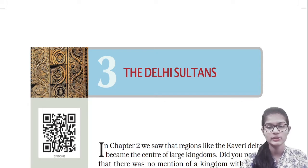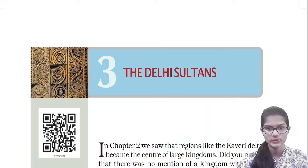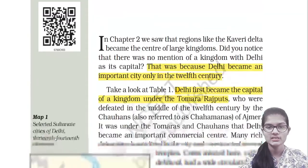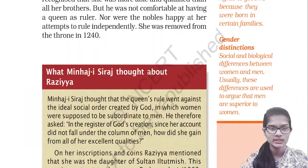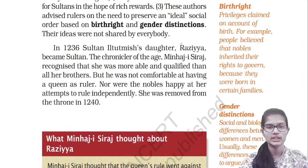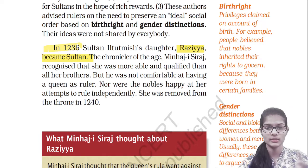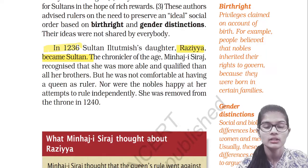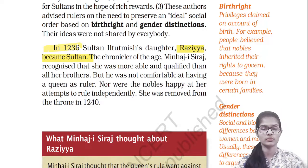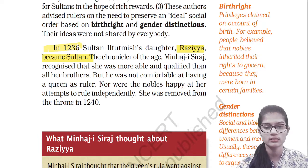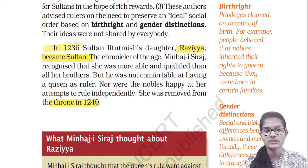Hello everyone, my name is Shambhavi. Hope you all are doing well. Today we are going to study Chapter 3 on the Delhi Sultanate from Class 7 History. Last time we studied that in 1236 Razia Sultan became ruler, but many people were not happy with her as a queen and ruler, so in 1240 she was removed from the throne.